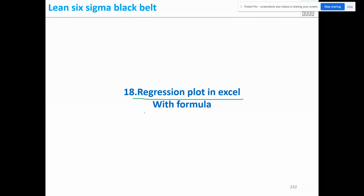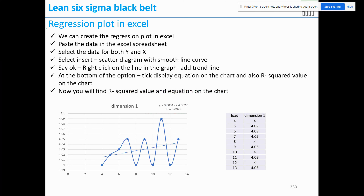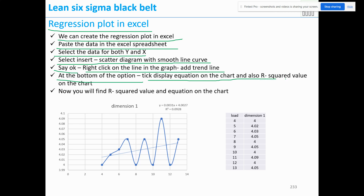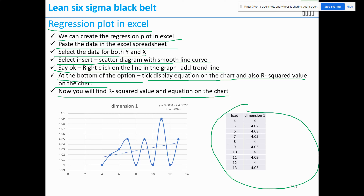Next, regression plot in Excel. Paste the data in the Excel spreadsheet, select the data for both Y and X, go to Insert > Scatter diagram with smooth line curve, click OK. Then right-click on the line in the graph and select Add Trend Line. At the bottom of the options, tick Display Equation on Chart and also R-squared value on the chart. You will then find the R-squared value and the equation.